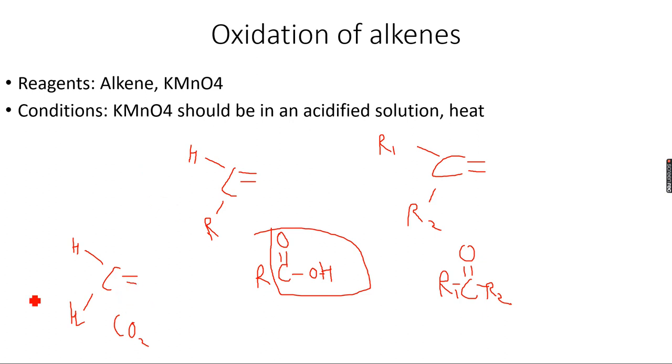I'm repeating them: if there are two hydrogen atoms attached to the double bonded carbon, then you get CO2 upon oxidation, which is carbon dioxide gas. When you have one H atom and one carbon chain attached to the double bonded carbon atom, then you get a carboxylic acid.